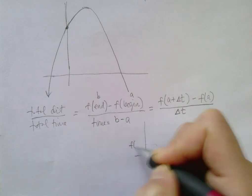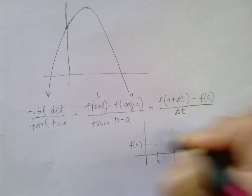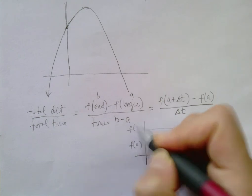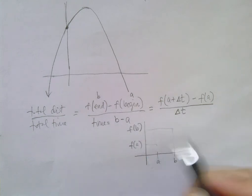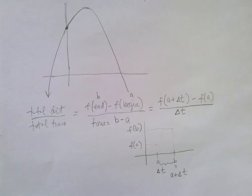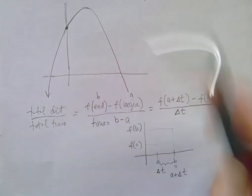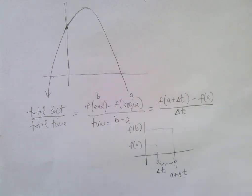Just expressed in a different way. Again, here's b, a, f of a, f of b. Instead of expressing this in terms of a and b, we instead just call b, a plus some change in time, where this is your delta t.